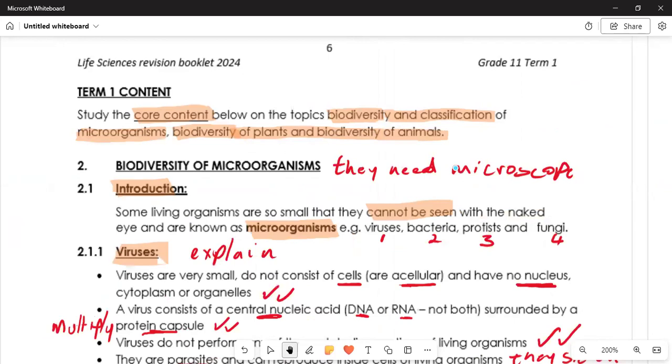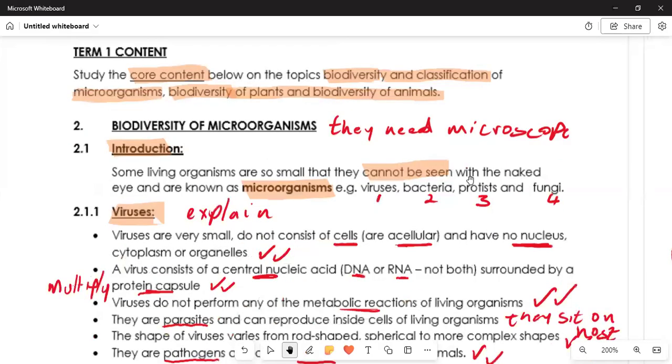Today we are looking at Term 1 content. Under Term 1 content, study the core content below on the topics of biodiversity and classification. We know that you discussed this in Grade 10, where you had the chance of looking at biodiversity and classification. When we are saying classification, in these organisms we have number one microorganisms, number two biodiversity of animals. We are going to look at those two aspects.